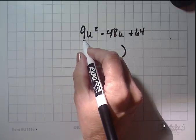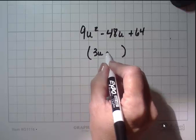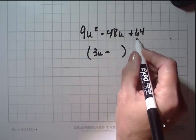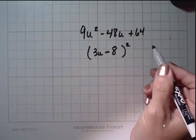So the square root of 9u squared is 3u. It's always minus. The square root of 64 is 8. And that's squared. And you're done.